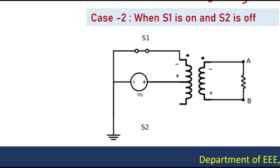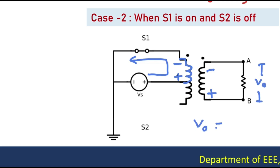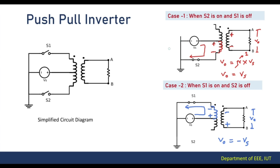Now let's see what happens when S1 is conducting and S2 is off. If we keep S2 open and close switch S1, the current will pass through the opposite path. Correspondingly, the voltage induced in the primary coil will be in the opposite direction, and subsequently the voltage induced in the secondary coil will also be opposite. The output voltage at the AB terminal will be of opposite polarity. So when S2 is conducting the output is positive polarity, and when S1 is conducting the output is negative polarity — giving us an alternating voltage.